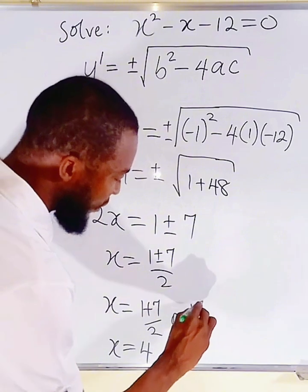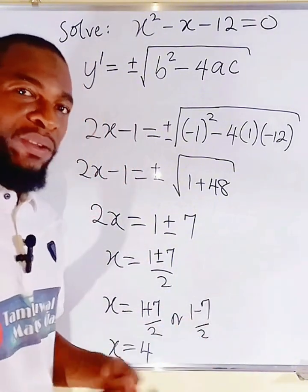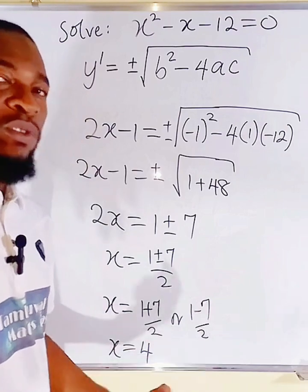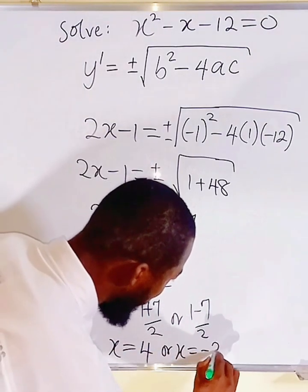Or the other one, which is 1 minus 7 divided by 2. 1 minus 7 is minus 6. Minus 6 divided by 2 is minus 3. Or x equal to minus 3.